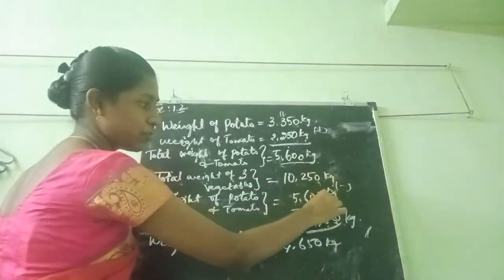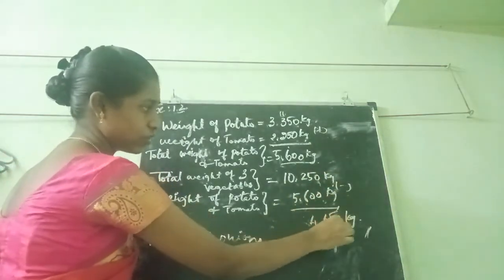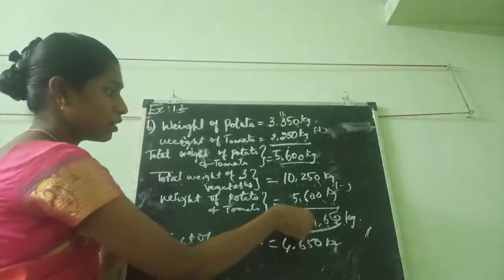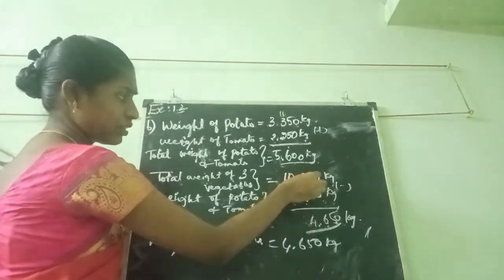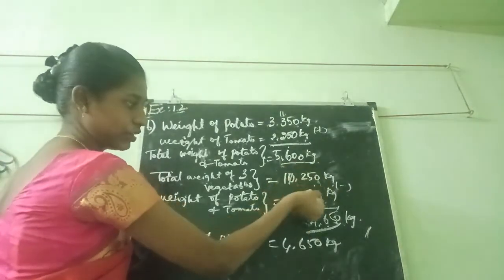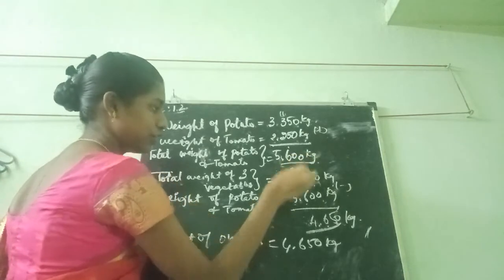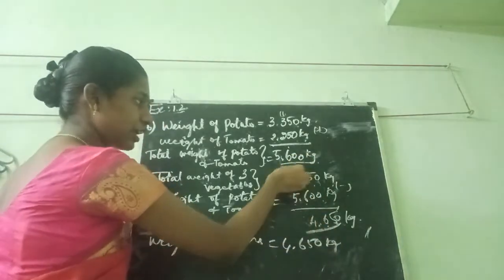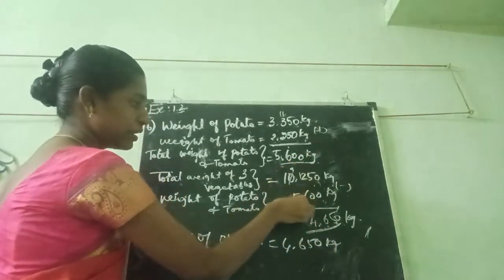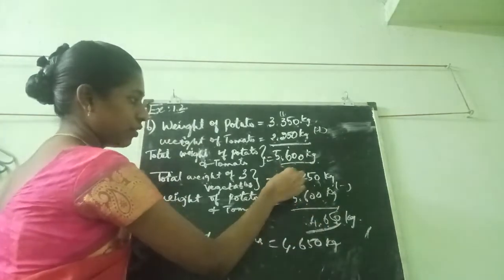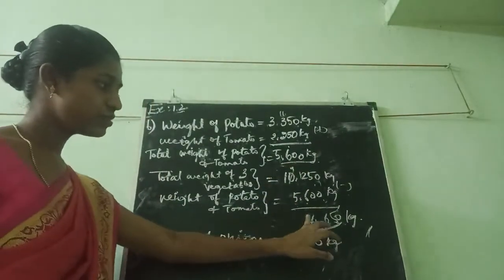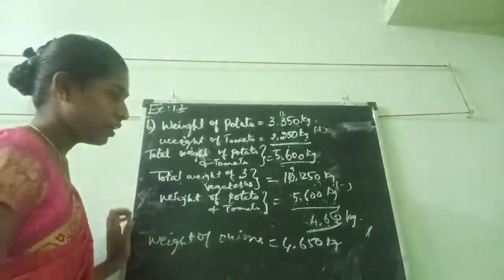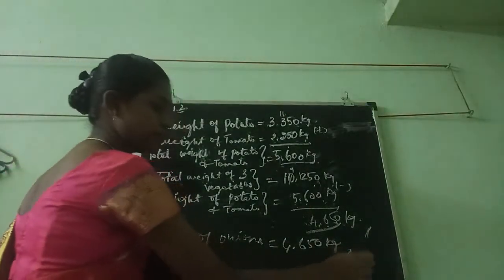Checking: 0 minus 0 is 0; 5 minus 0 is 5; carry — here 12, 12 minus 6 is 6; 9 minus 5 is 4. The answer is 4.650 kg. This is the answer for this sum.